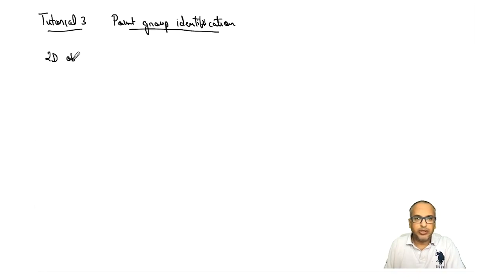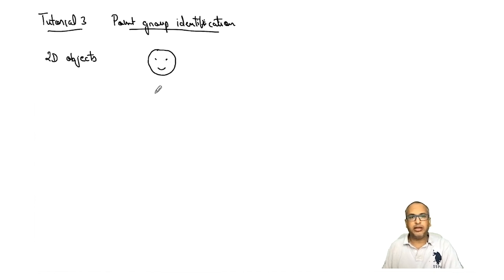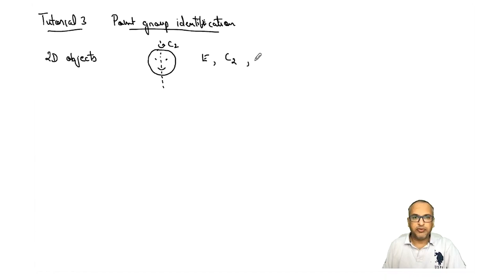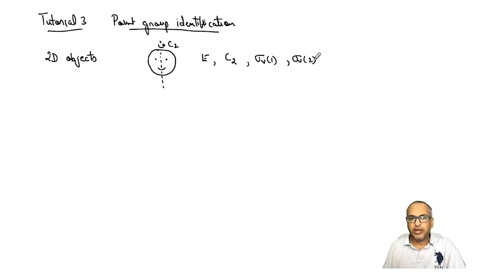Let's say we have a smiley face — a circle with two eyes and a smile. What is the point group? If we list the elements, we have E, a C2 passing through the center, and two sigma planes: sigma v1 perpendicular to the plane of the board carrying C2, and sigma v2 in the plane of the board also carrying C2. This is the same as the water molecule, so the point group is C2v.